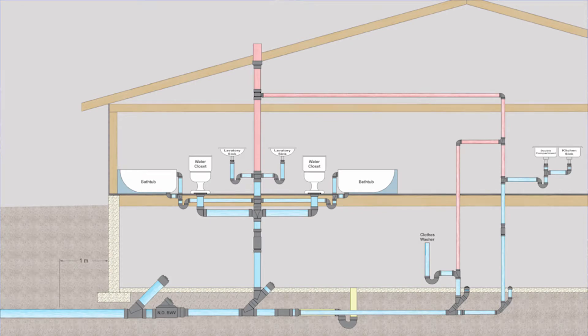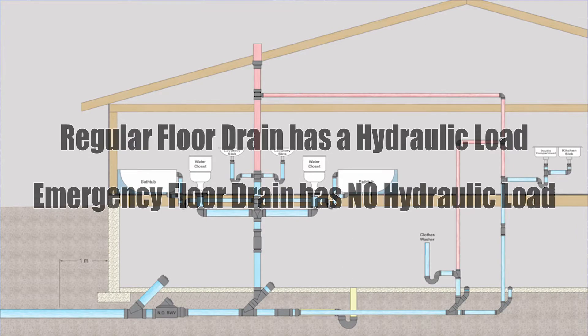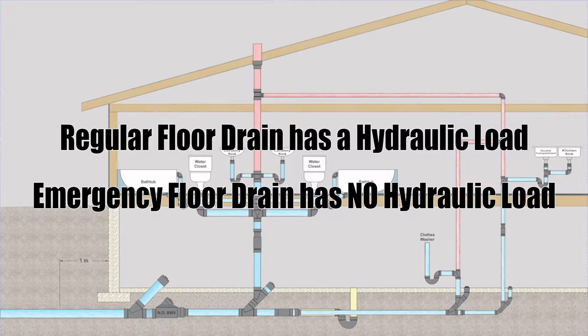So this is our example and there's a couple things I should clarify here. On the main floor we have two bathroom groups with a flush tank water closet. Also on the upstairs, on the far right, we have a double compartment kitchen sink. If we drop down into the basement we will see a clothes washer, or laundry standpipe as we call it. And kind of hidden in the middle there in the floor is our floor drain. This is a regular floor drain and not an emergency floor drain — with a regular floor drain you can't omit the fixture units.